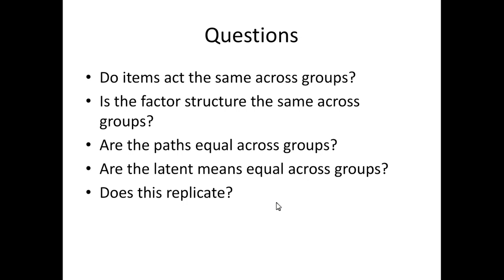The purpose of this analysis is several-fold — it's a global scale assessment. Do those items act the same across groups? Do they give you the same average score? Do they have the same weight to their factor? Do they have the same variance? Is the factor structure the same across groups — are the items even correlated with the same factor? Are the paths equal across groups? Are the latent means equal? We're able to focus in on small pieces of the model and look at each group's loadings, intercepts, and variances separately.